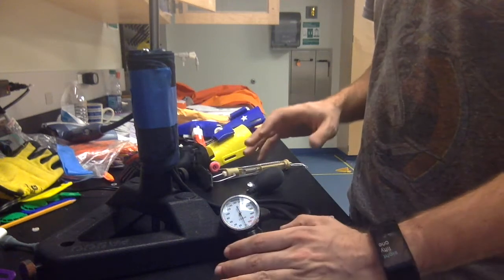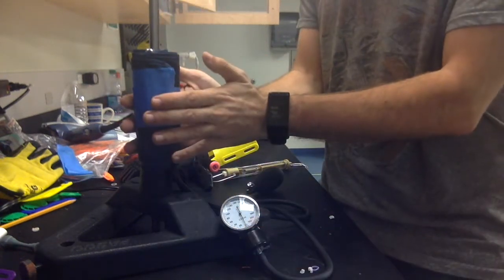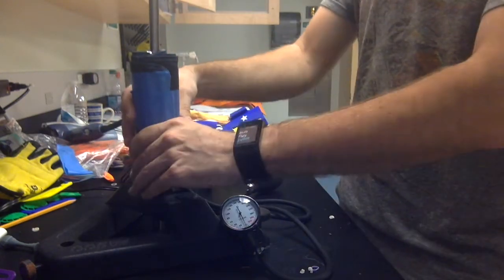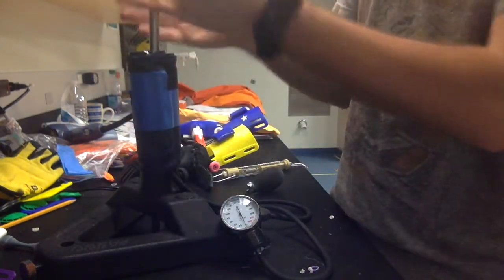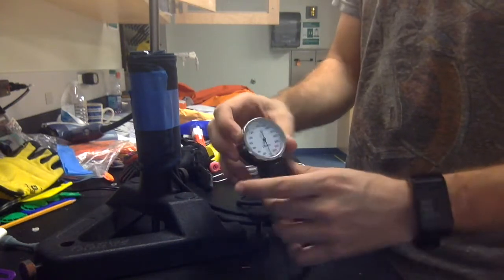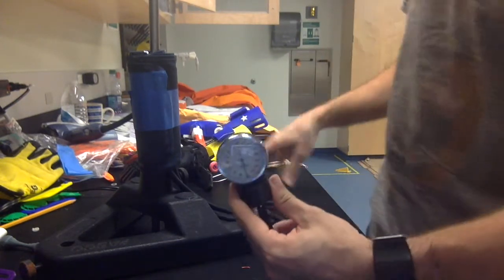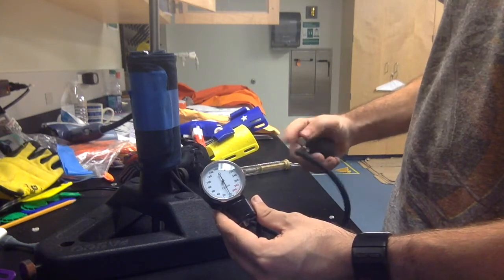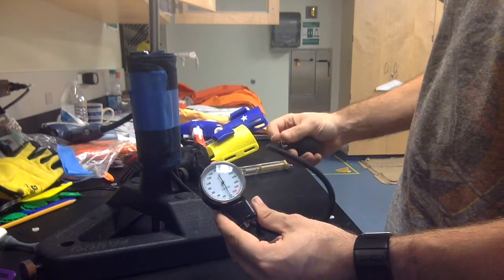For e-nable hands, what we're using is just a modified blood pressure cuff. I've taken the cuff and rolled it into a cylinder and secured it to this little stand. So we have our blood pressure cuff, and what you're going to do is inflate it up to 20 millimeters of mercury as a starting point.